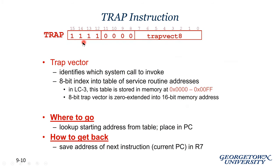In our LC3, the instruction for trap is simply 1111. Since we have 256 possible service routines, we need 8 bits to index into our trap table. The least significant 8 bits indicate which service routine we want to run. Bits 11 through 8 are not used.